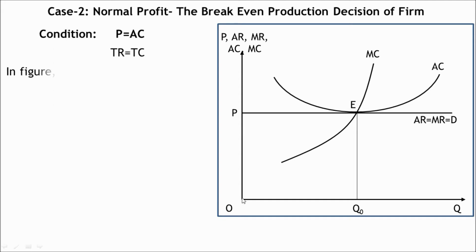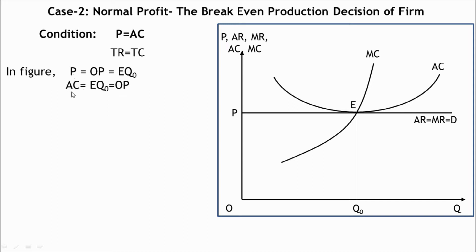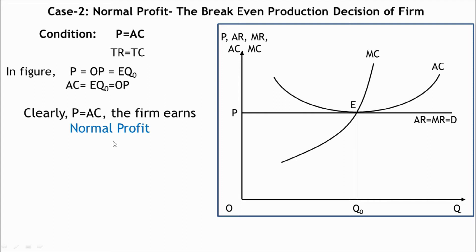In the figure, price equals OP equals EQ0. Average cost at Q0 output level is also EQ0 or OP. Since price EQ0 or OP equals average cost EQ0 or OP — that is, since price equals average cost — the firm receives only normal profit and supernormal profit is absent. At point E, price and average cost become equal, which is the condition for breakeven.